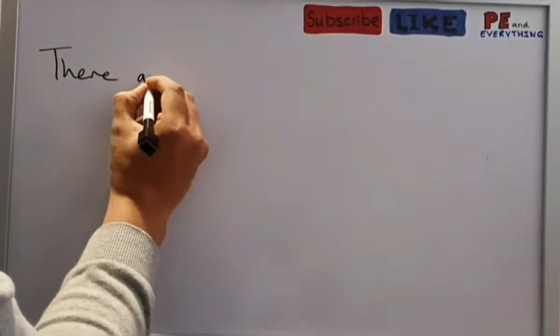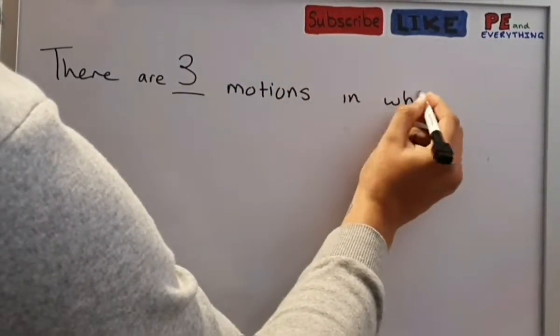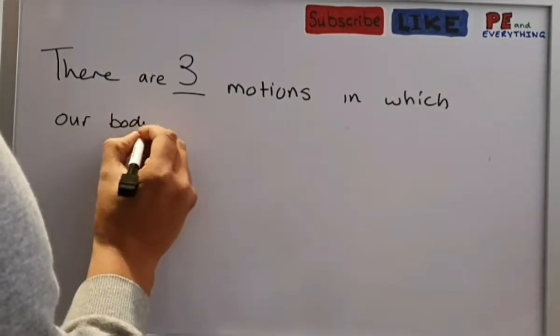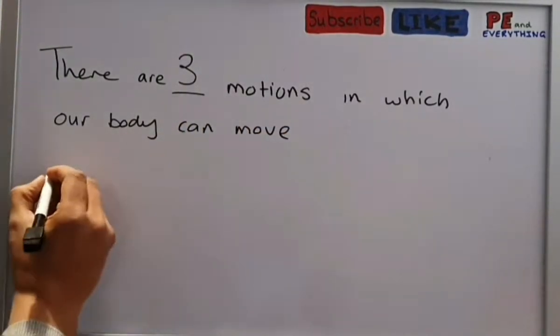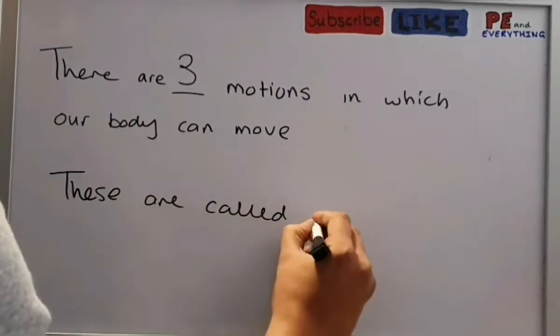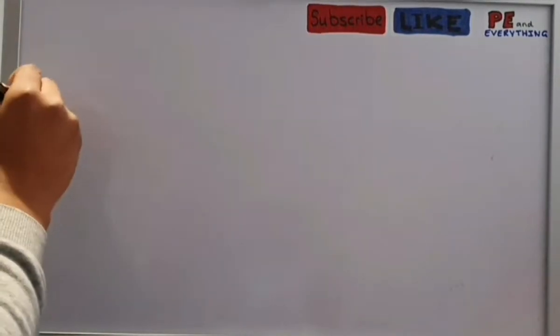Getting that understood is quite tricky, but once you understand it, it's perfect. As we know, there are three motions in which our bodies can move. But what are they called? These are called planes. Let's take a look at these three planes.